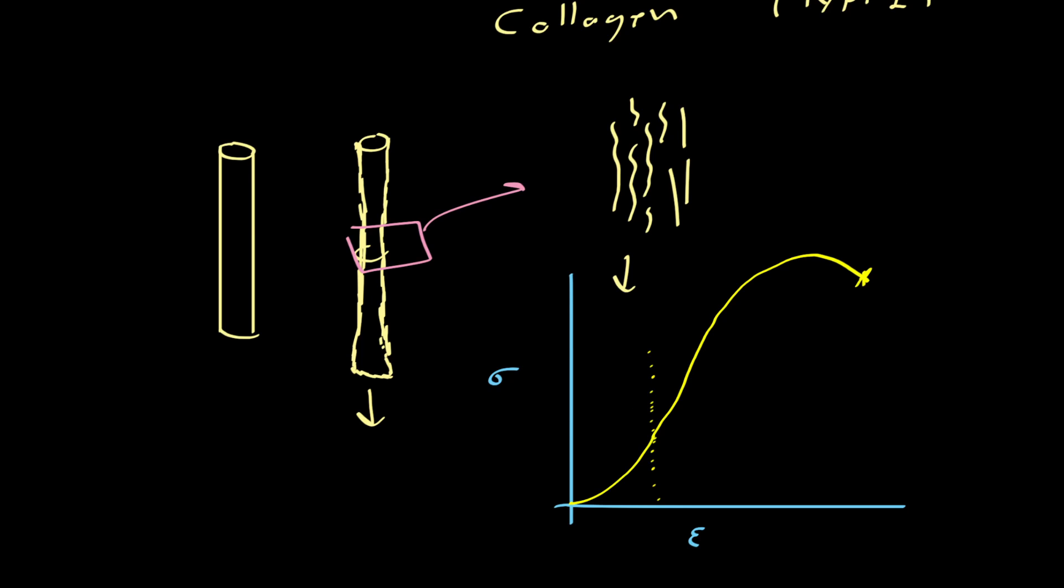We also saw that tendons exhibit viscoelasticity, which means if we load them very suddenly, their stress-strain curve looks different—steeper. This is very useful for protecting tendons from damage. Tendons are better at handling high sudden loading rates because of that viscoelastic property.